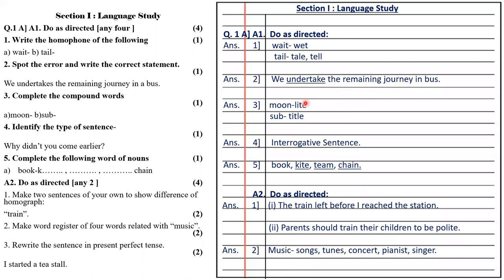Question number three is complete the compound word: moonlight, subtitle. Question number four, identify the type of sentence. There is a question mark at the end, so it is very indicative — it is an interrogative sentence.